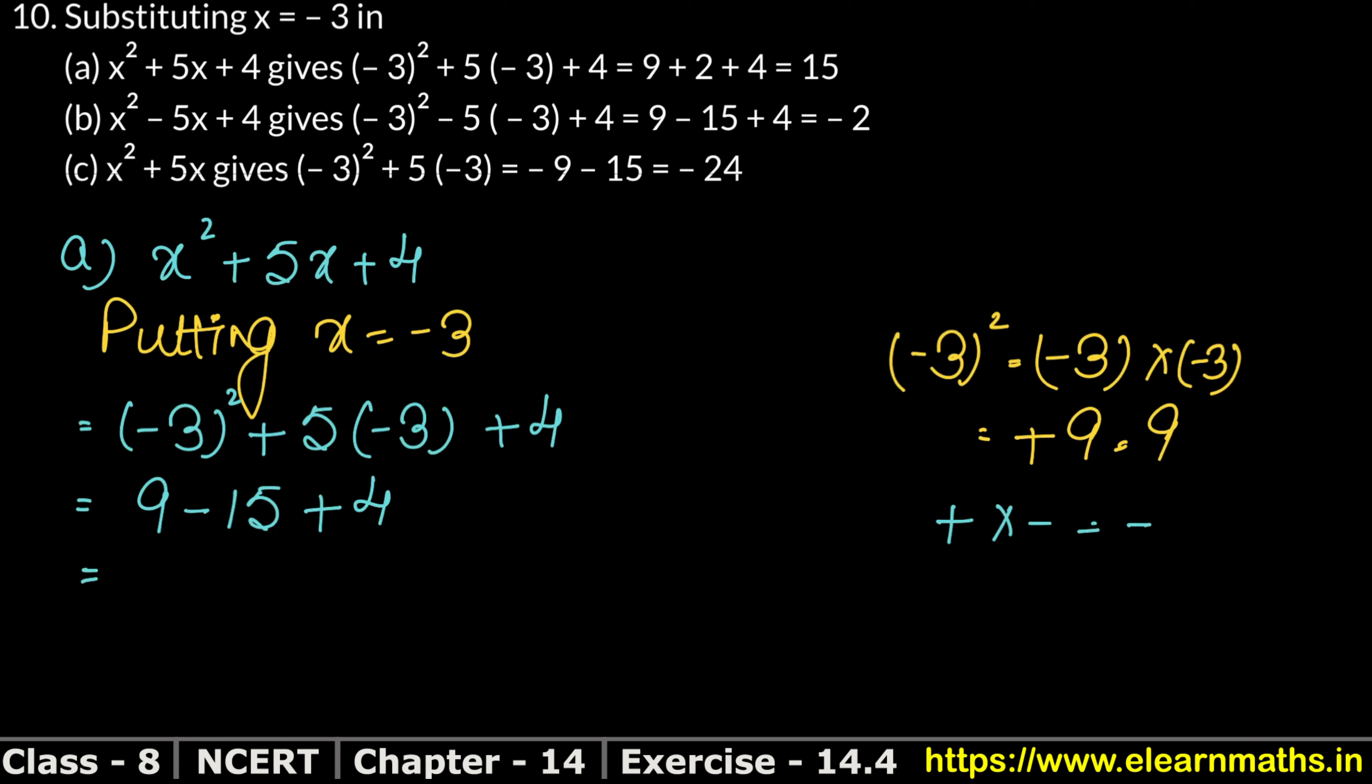Plus values which are 9 plus and 4 plus, we will add them. So 9 plus 4 is 13 minus 15. Now 13 plus is 15 minus - the bigger value is 15 minus. So how much will it be? Minus 2.